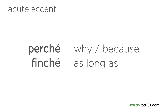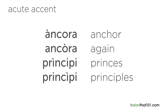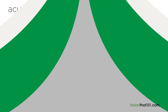Vowels that are not at the end of a word are rarely marked with an accent outside of dictionaries. When this happens, it's used to help the reader distinguish between two words which would otherwise appear the same. Now you know the function of accents in Italian.